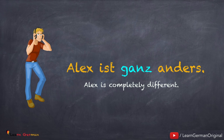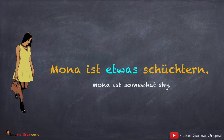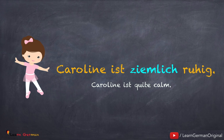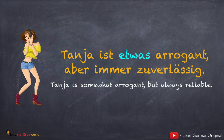Alex ist ganz anders. Mona ist etwas schüchtern. Caroline ist ziemlich ruhig. Boris ist immer hilfsbereit. Manchmal hat eine Person auch negative Eigenschaften — dann kann man so einen Satz bilden: Tanja ist etwas arrogant, aber immer zuverlässig.